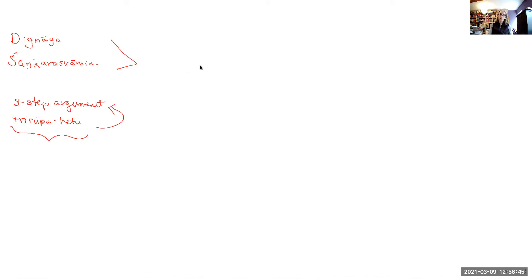And that is the introduction of something called the example, or the drstanta. We already saw this in the classic example with sound being non-eternal and the example of the pot. That is a drstanta. What is important in these contexts is that this stage of the development added the drstanta to the three-step argument as an explicit step. It's an explicit characteristic, not just something that you can add to give your audience an understanding. It becomes a formal feature of the argument.